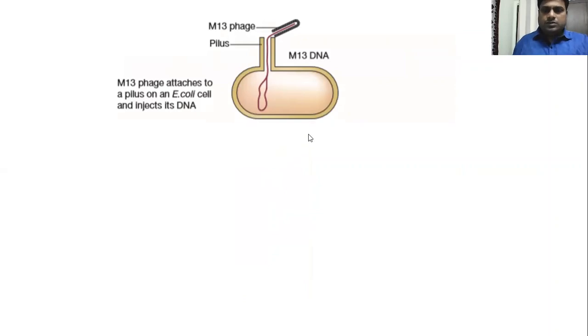Now coming to M13 and how it has its life cycle. M13 can infect the host cell E. coli having the conjugation tube or pilus. This is coded by the plasmid DNA that has the tra gene. If it is there, it can adsorb and go inside the host cells.